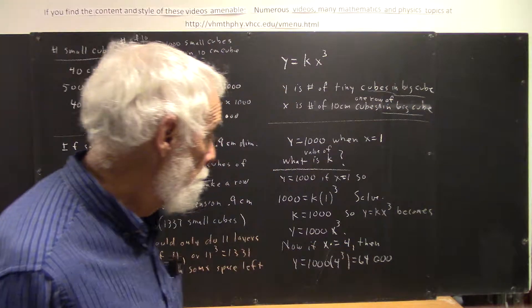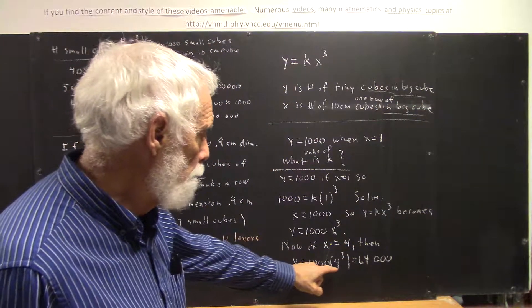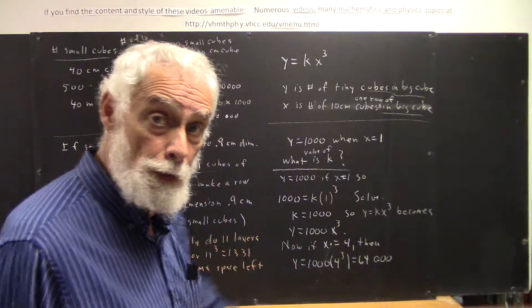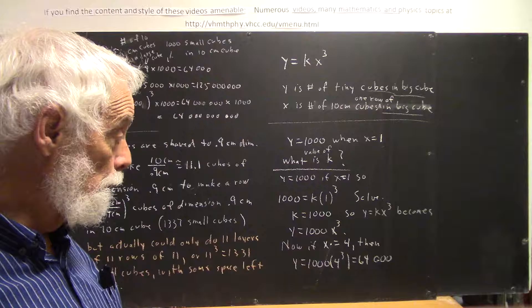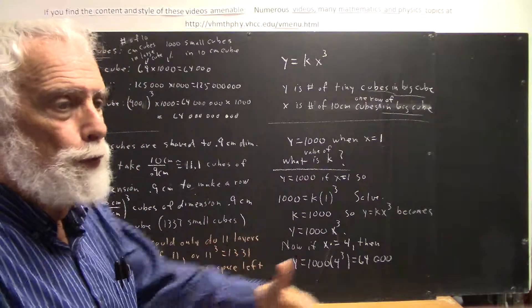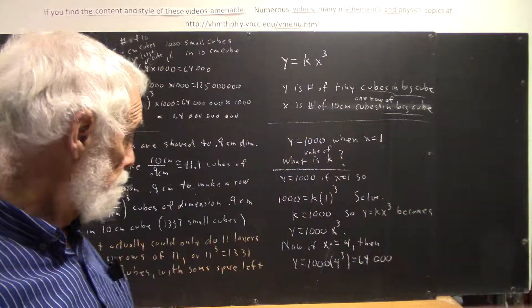If x is four, then y equals a thousand times four cubed, and that comes out 64,000, and you'll recall that that was the result that we got for the number of one centimeter cubes in your 40 centimeter cube.